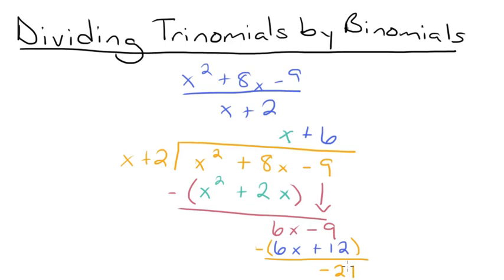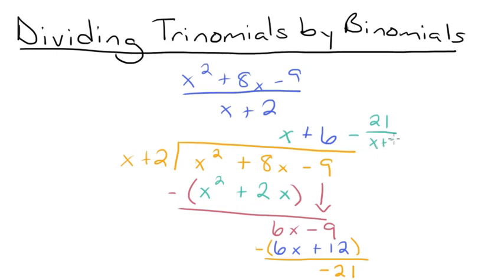So here we have our remainder again. When we have our remainder, we take this number and it will be the numerator of our fraction — so we'll have minus 21 — over the divisor, which is x plus 2.